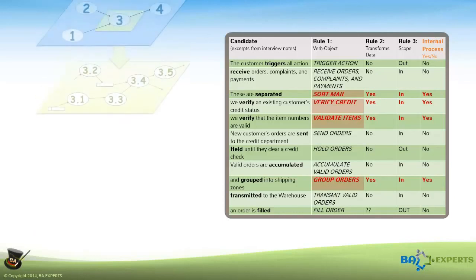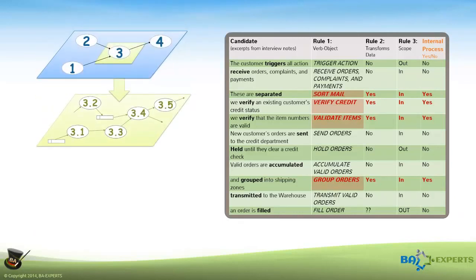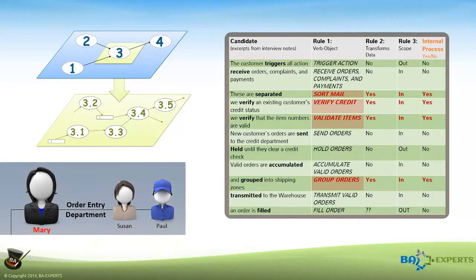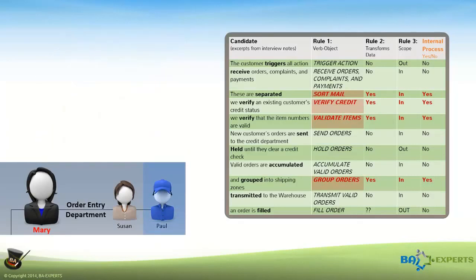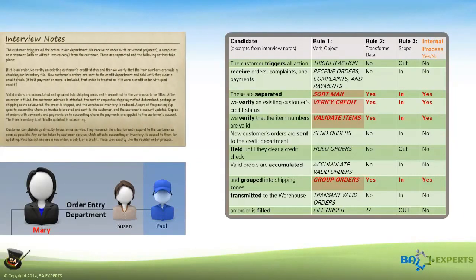To create the lower-level diagram, we need access to Paul, an order entry clerk who reports to Mary. He is actively involved in the process we're exploding and helped us interpret the interview notes to identify the internal processes.